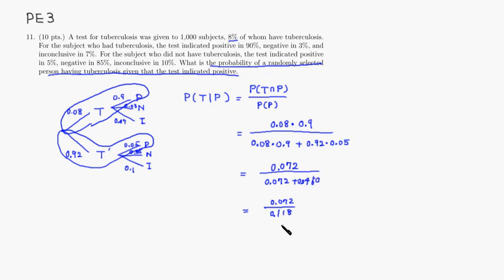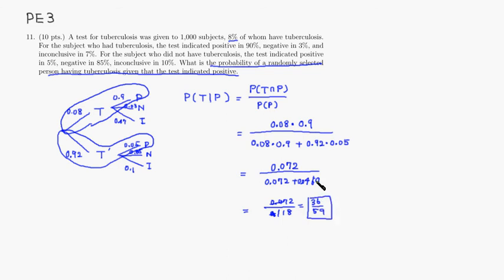We can multiply top and bottom by 1,000 to clear the decimals: that gives 72 over 118. Dividing top and bottom by 2 gives 36 over 59. So the probability of having tuberculosis given a positive test result is 36/59.